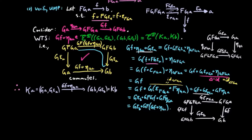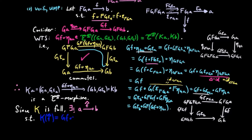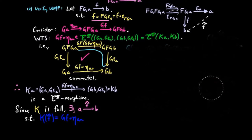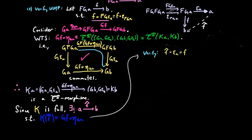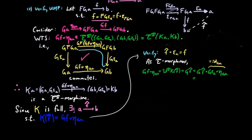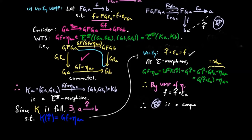So GF(eta_{GA}) is a morphism in the Eilenberg-Moore category. Since K is full, there exists a unique morphism F̂ such that K(F̂) equals GF(eta_{GA}). We want to show that F̂ is the unique factorization of F through epsilon_A. Uniqueness follows from epsilon being an epimorphism since G is faithful, so we only have to show that F̂ ∘ epsilon_A equals F. As morphisms, GF(eta_{GA}) equals UTK(F̂) by definition of F̂. Pre-composing by the identity in the form of the triangle identity G(epsilon_A) ∘ eta_{GA}, and factoring out G, we obtain G(F̂ ∘ epsilon_A) ∘ eta_{GA}. Therefore, by the universal mapping property of the unit eta, F equals F̂ ∘ epsilon_A. Therefore the diagram above is a co-equalizer diagram, and thus epsilon is a regular epimorphism, which completes the forward direction.